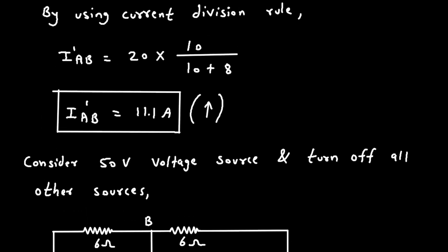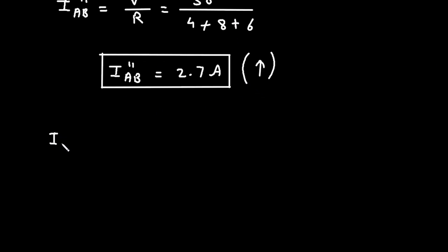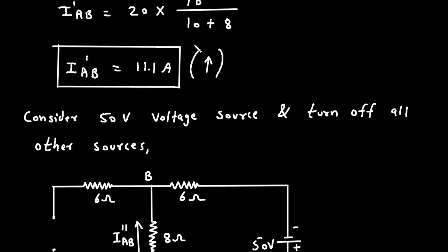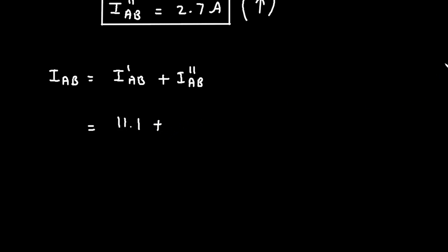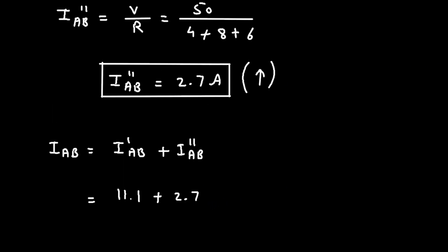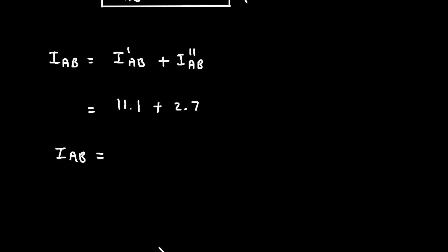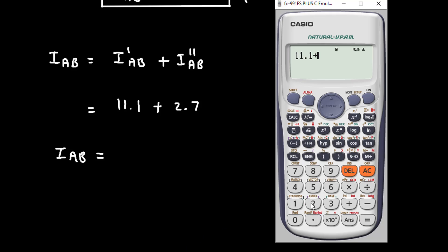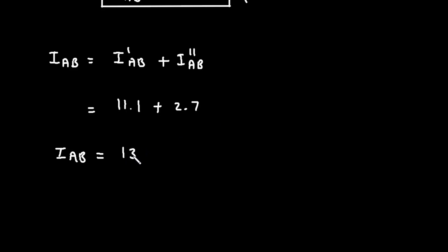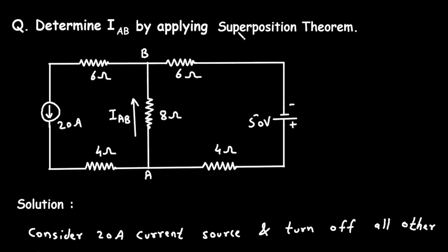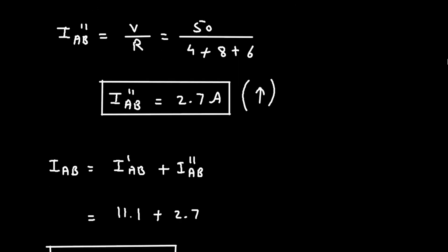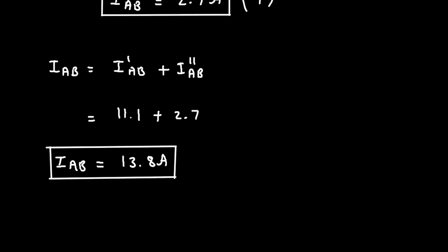Since IAB prime and IAB double prime are both directed upward, we add them. IAB equals IAB prime plus IAB double prime, which is 11.1 plus 2.7, equal to 13.8 ampere. This is the value of IAB found by superposition theorem. Don't forget to check out the other videos on this channel — thanks for watching.